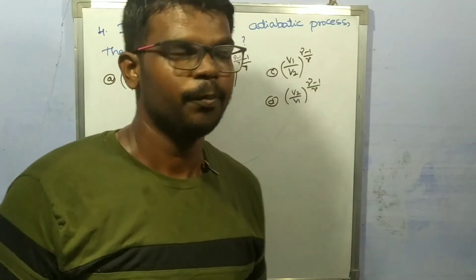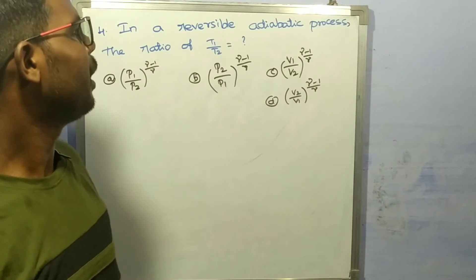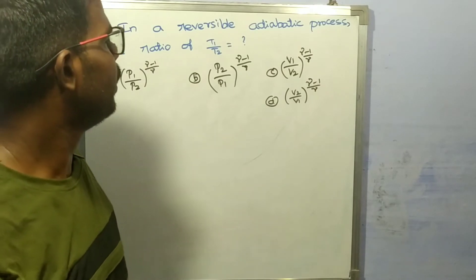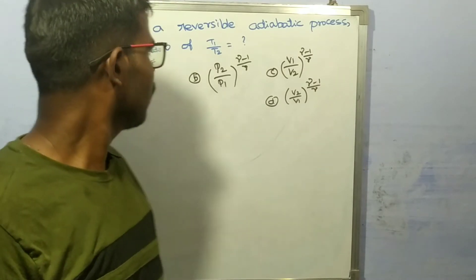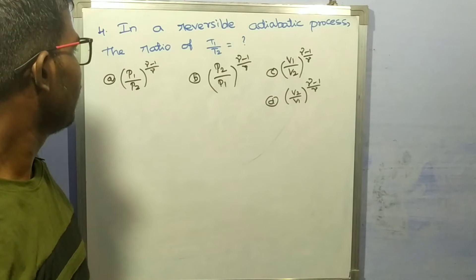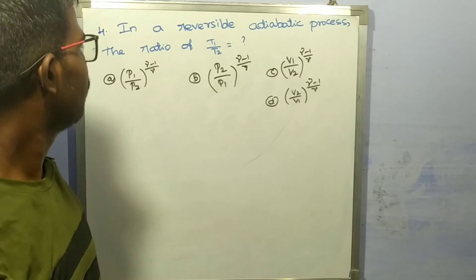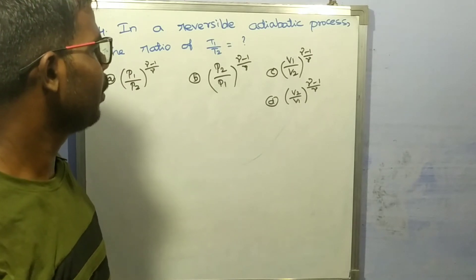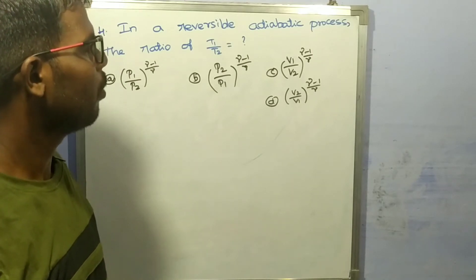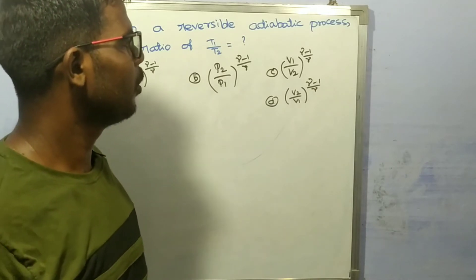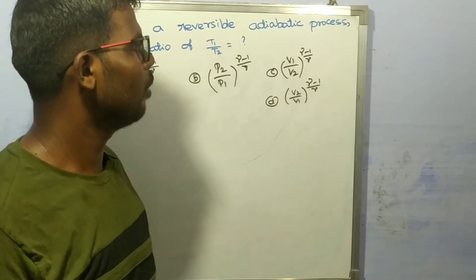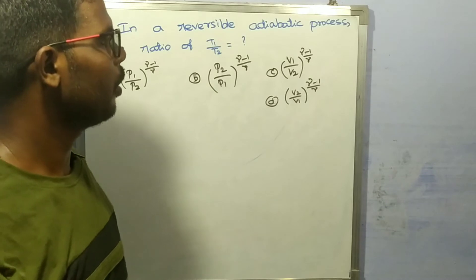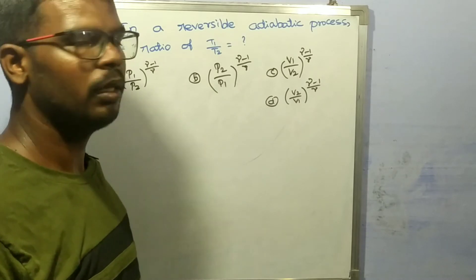Fourth question: in a reversible adiabatic process, the ratio T1/T2 is equal to — options are: A) (P1/P2)^((γ-1)/γ), B) (P2/P1)^((γ-1)/γ), C) (V1/V2)^((γ-1)), D) (V2/V1)^((γ-1)/γ).